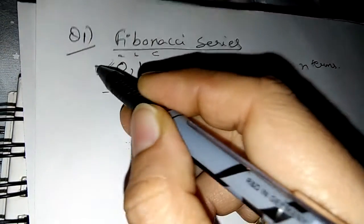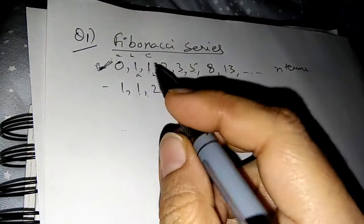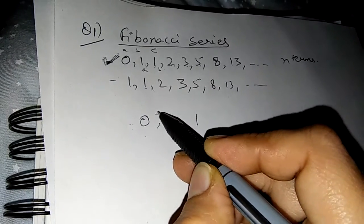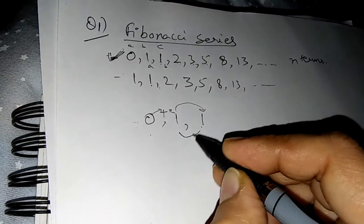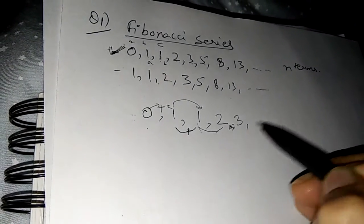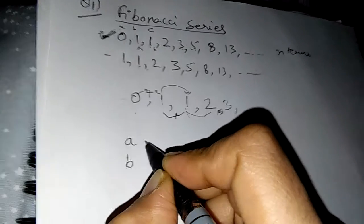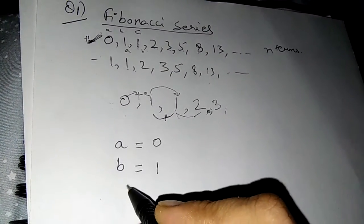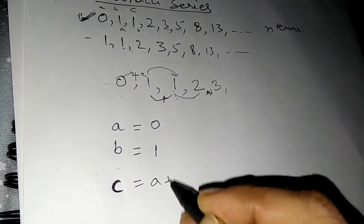I am taking the first type. Now how will you write the program? We should know what we have to do. Suppose this is the first term, this is the second term, and this is the third term. I have to find the sum of these two and then generate the third number, again find the sum of those two and find the next number, and so on. We take two variables: first is A and second is B as the first two numbers. Suppose A is 0, B is 1, and the third number would be C, and C should be A plus B.